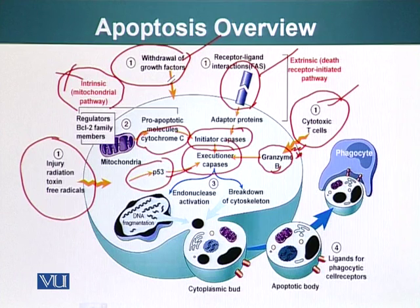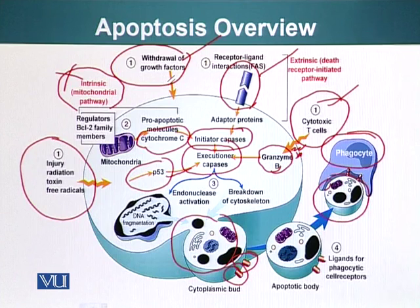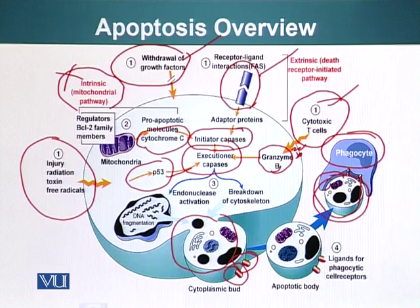In apoptosis, all the macromolecules of the cell are degraded and bundled up into vesicles. These vesicles have proteins sticking out which act as ligands for phagocytic cells. The phagocytic cells bind these vesicles being released by the dying apoptotic cell, and through receptor-mediated endocytosis they engulf and degrade these little vesicles. This is the basic overview of apoptosis.